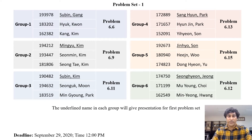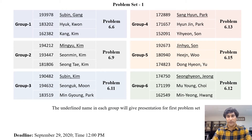Each group is assigned one problem. Group 1 is given problem 6.6, group 2 is given problem 6.9, group 3 is given problem 6.11, group 4 is given problem 6.13, group 5 is given problem 6.15, and group 6 is given problem 6.12.